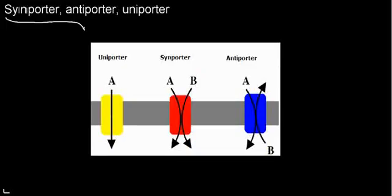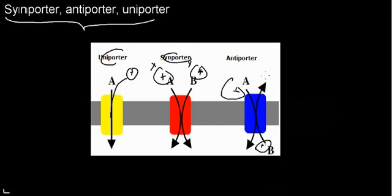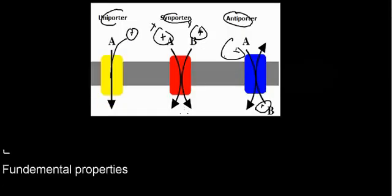We can further categorize ion channels by the number of ion species and the direction they travel. If you have one type of ion going in one direction, you have a uniporter. If you have two types of ions both going in the same direction, you're also dealing with a uniporter. And if you have one ion going one way and another type of ion going the other way, you have an antiporter. This is fairly straightforward, so we're going to keep moving.